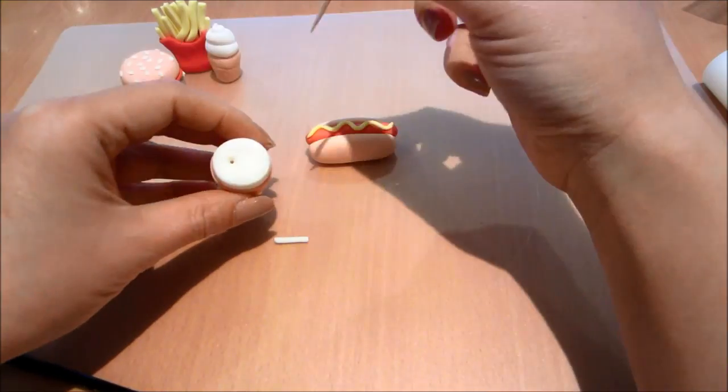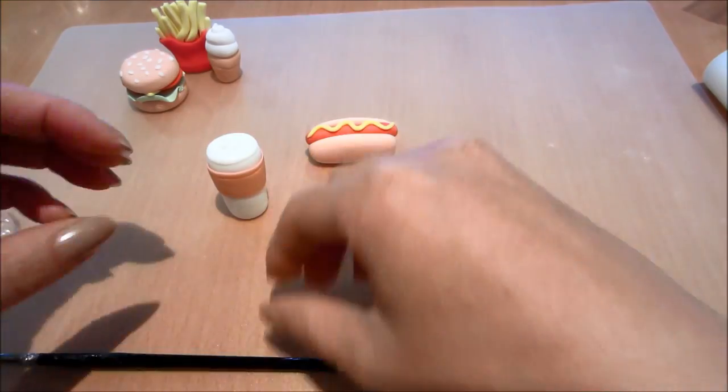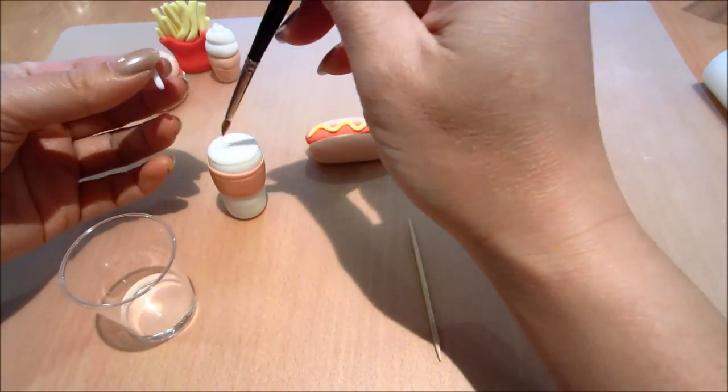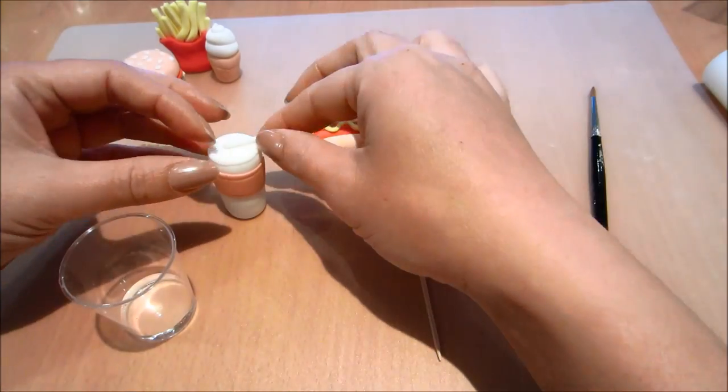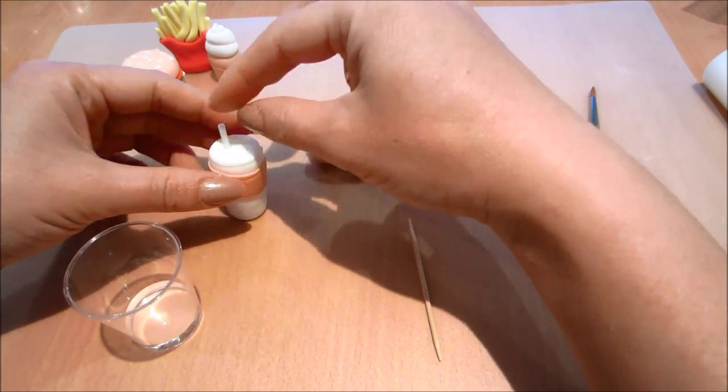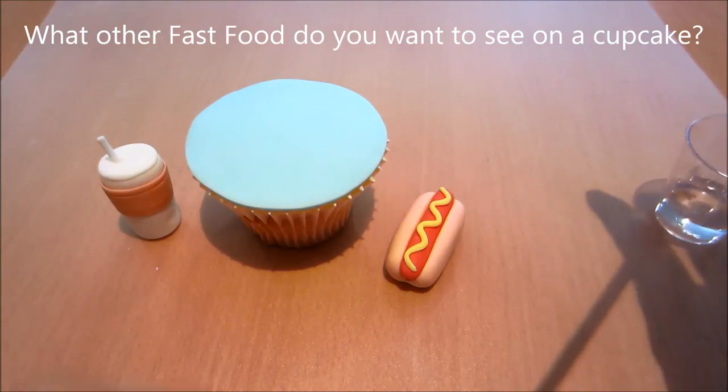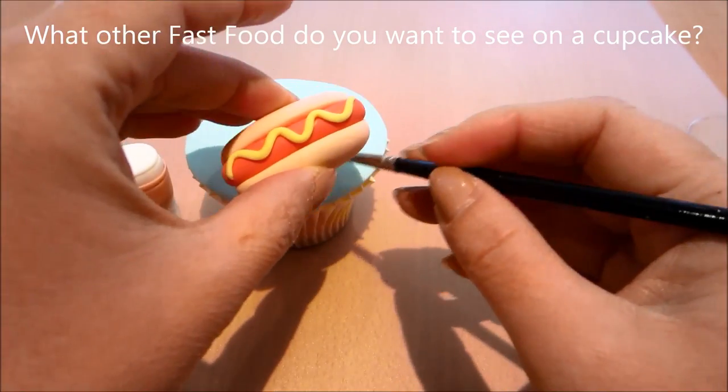Using a toothpick to create a little indent into the drink. And then gluing my little straw in. And now assembling it onto the cupcake with a little bit of water or edible glue.